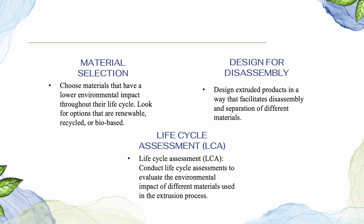How can we use sustainable materials? First, by selecting the correct material. Choose materials that have a lower environmental impact throughout their life cycle. Look for options that are renewable, recycled, or bio-based. For example, select polymers made from bio-based sources or utilize recycled plastic for extrusion. Next, by design for disassembly. Design extruded products in a way that facilitates disassembly and separation of different materials, allowing for easier recycling or repurposing of individual components after use. Last but not least, by life cycle assessment (LCA). Conduct life cycle assessments to evaluate the environmental impact of different materials used in the extrusion process. Consider factors such as carbon footprint, energy consumption, resource depletion, and waste generation to make informed decisions about material selection.